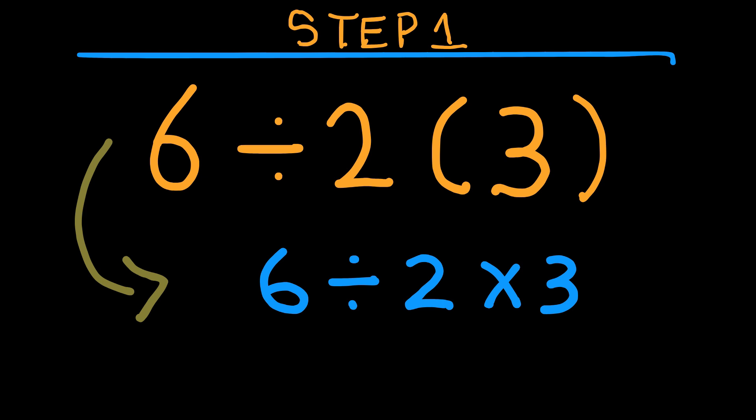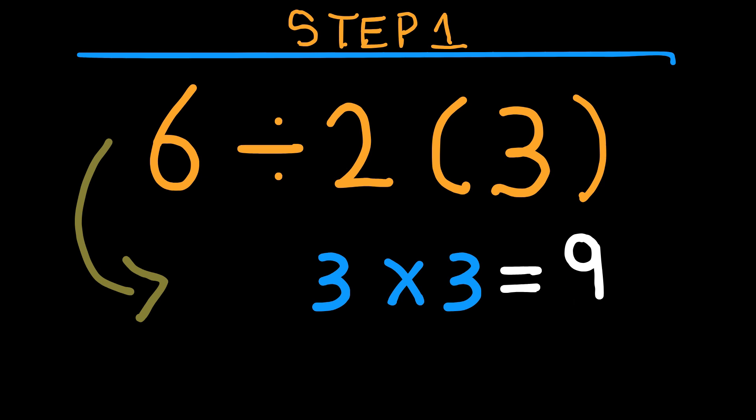Some people see this and think 6 divided by 2 times 3. They say multiplication and division are done from left to right. So 6 divided by 2 equals 3, and 3 times 3 equals 9. The final answer is 9.